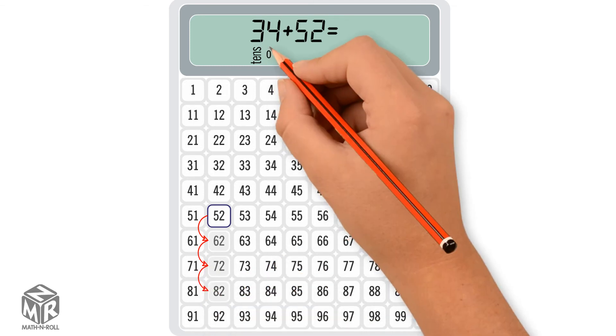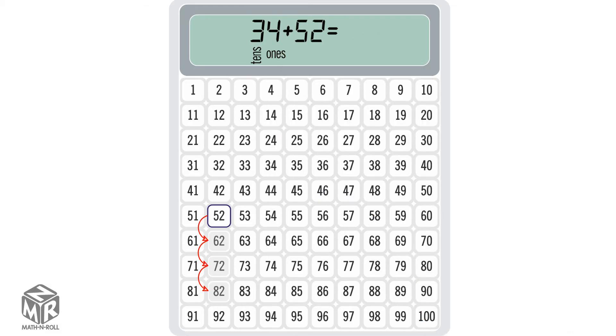34 has 4 ones, so we continue at 82 and count 4 squares in the row. We get 86, so 34 plus 52 equals 86.